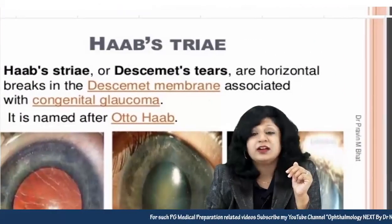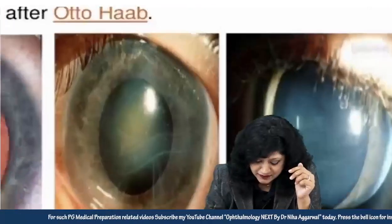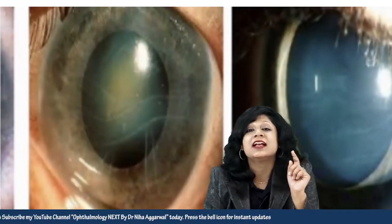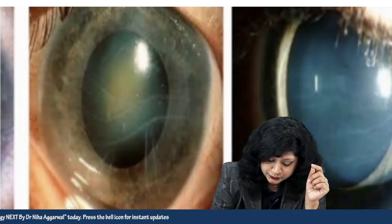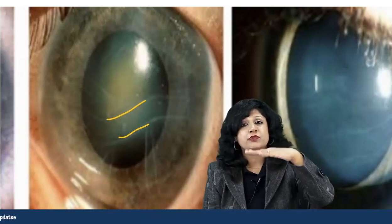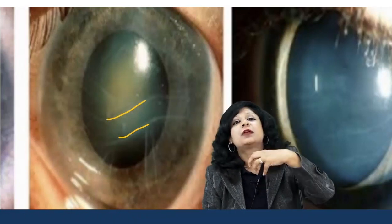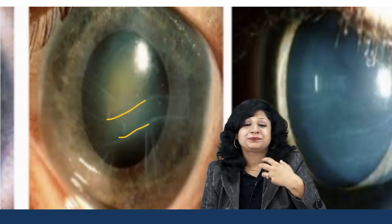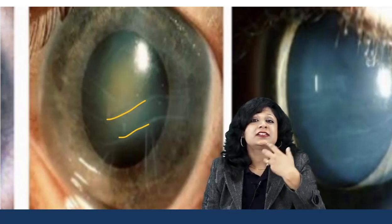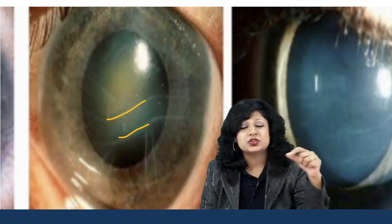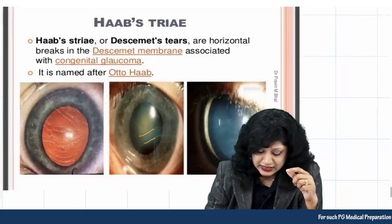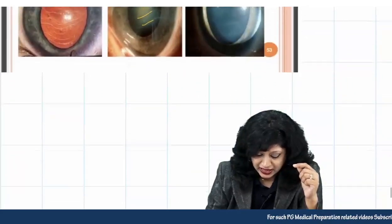Next is Haab's striae, very peculiarly found in congenital glaucoma or buphthalmos. These are horizontal lines — H for horizontal, H for Haab's — caused by undue stretching of the cornea due to corneal enlargement. These striations in the cornea in buphthalmos are your Haab's striae.